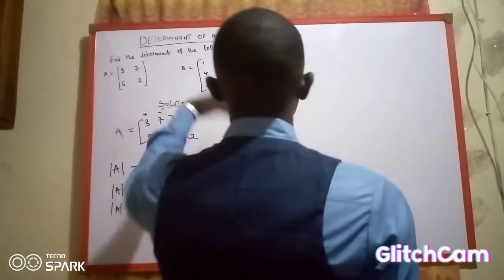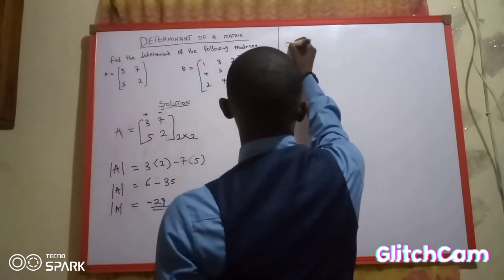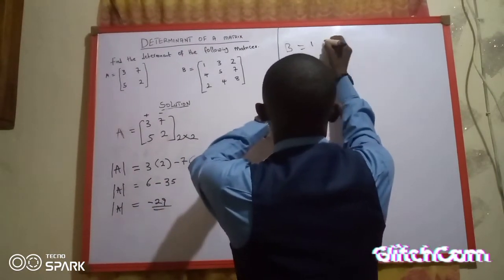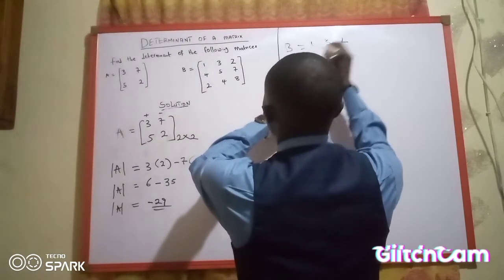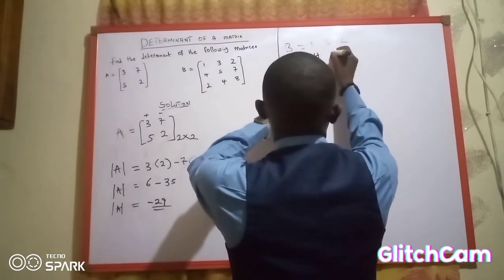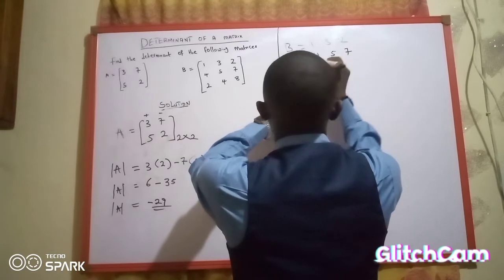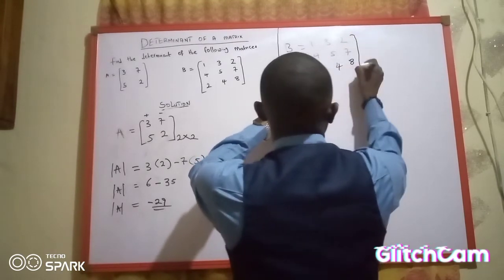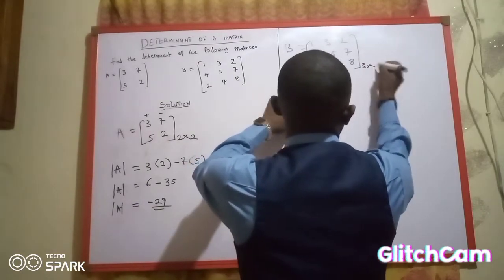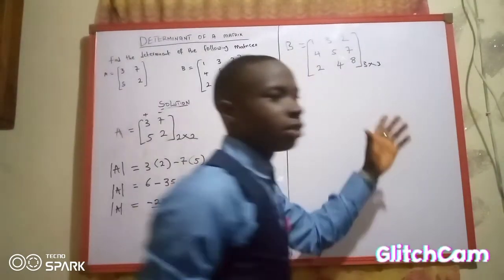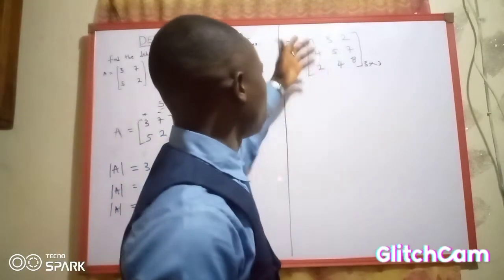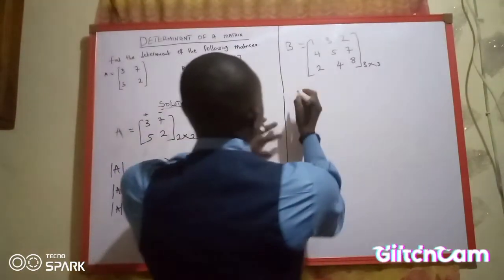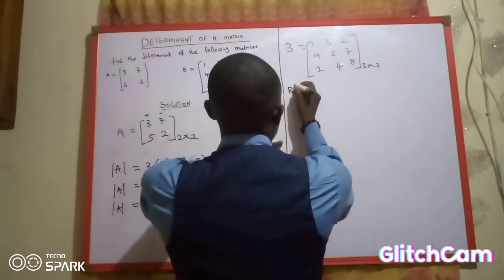Now let us find the determinant of the second matrix, which is a 3 by 3 matrix. It equals: 1, 3, 2 in the first row; 4, 5, 7 in the second row; and 2, 4, 8 in the third row. This matrix is 3 by 3 because it has 3 rows and 3 columns.